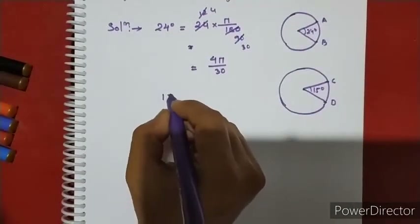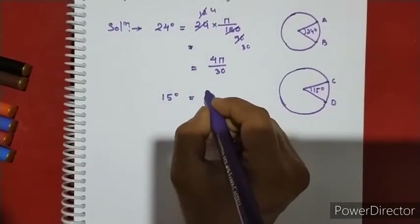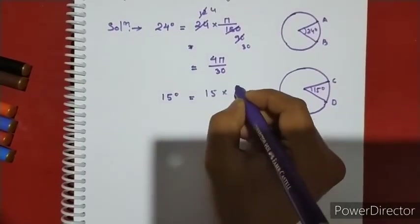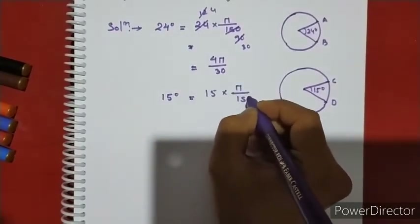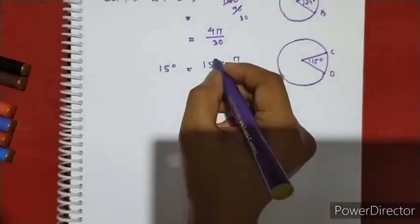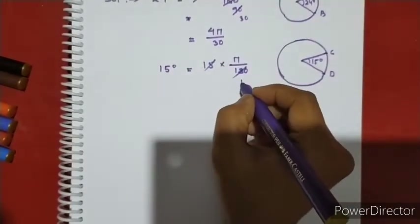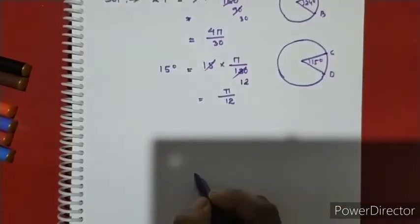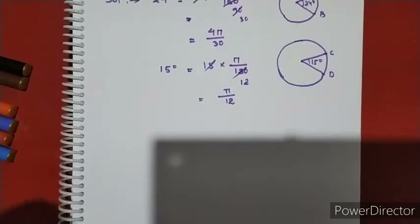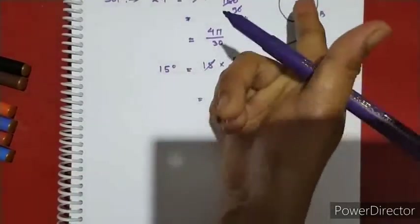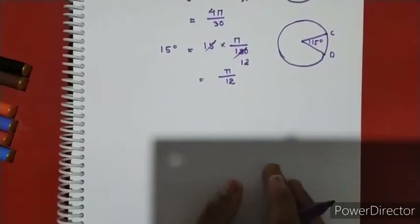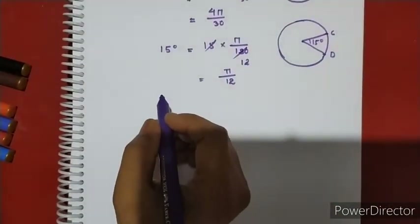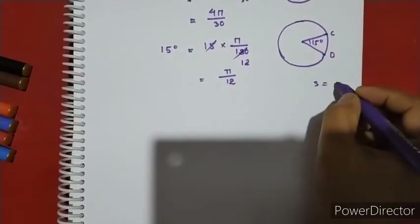Convert 15 degrees to radians: 15 into pi by 180, which gives pi by 12. Using the arc length formula s equals r theta, and since the arc lengths are equal, r1 times theta1 equals r2 times theta2.